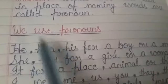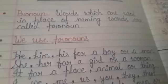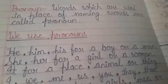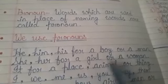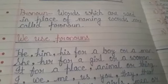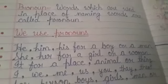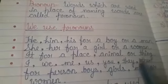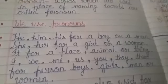We use pronouns he, him, and his for a boy or a man. Second point: we use she and her for a girl or a woman. We use it for a place, animal, or thing.